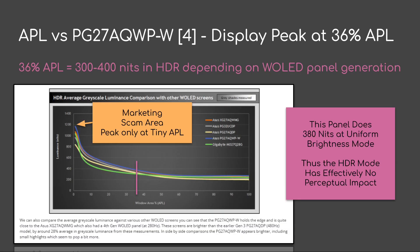Now let's look at where the display would be at 36% APL. TFT Central has a graph of window area, or APL, versus a bunch of panels — these are W OLED panels of various generations. You'll notice a common trend: over time there's been a small increase in brightness at 100% APL. And as you look down toward 0% or say 1% APL, there has been an increase in peak brightness — what I would call the marketing scam area, because you only really get a great increase in peak at very tiny APLs. So at 36% APL, across these panels we'd be somewhere between 300 to 400 nits.